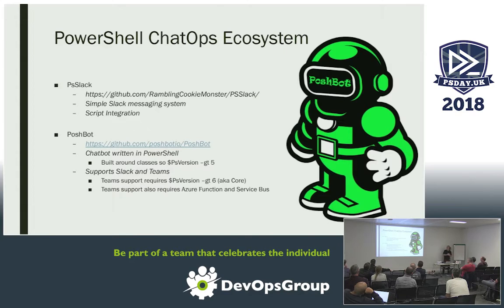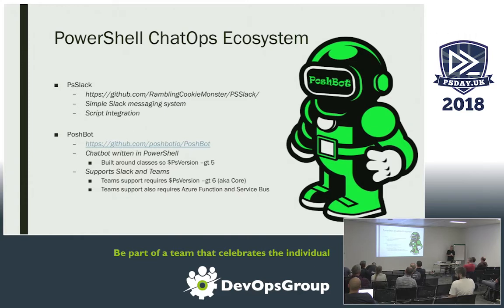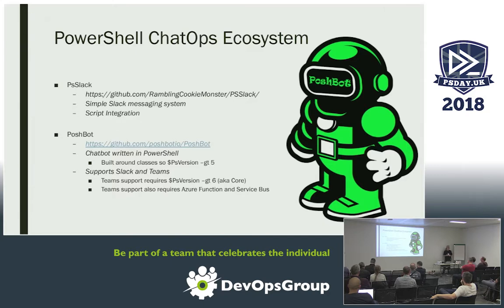PowerShell has two very useful modules for interacting with ChatOps. PSSlack is a simple script integration tool — it just lets you send a message back to Slack, and you can embed that in your scripts. The more advanced one is PoshBot, and this is a ChatOps bot implemented purely in PowerShell — so as we all do PowerShell, that's probably the best one to look at. There are others, like Hubot, which is the granddaddy of them all — GitHub wrote that for their internal processes many years ago — but that's written in CoffeeScript, which most of us don't read.